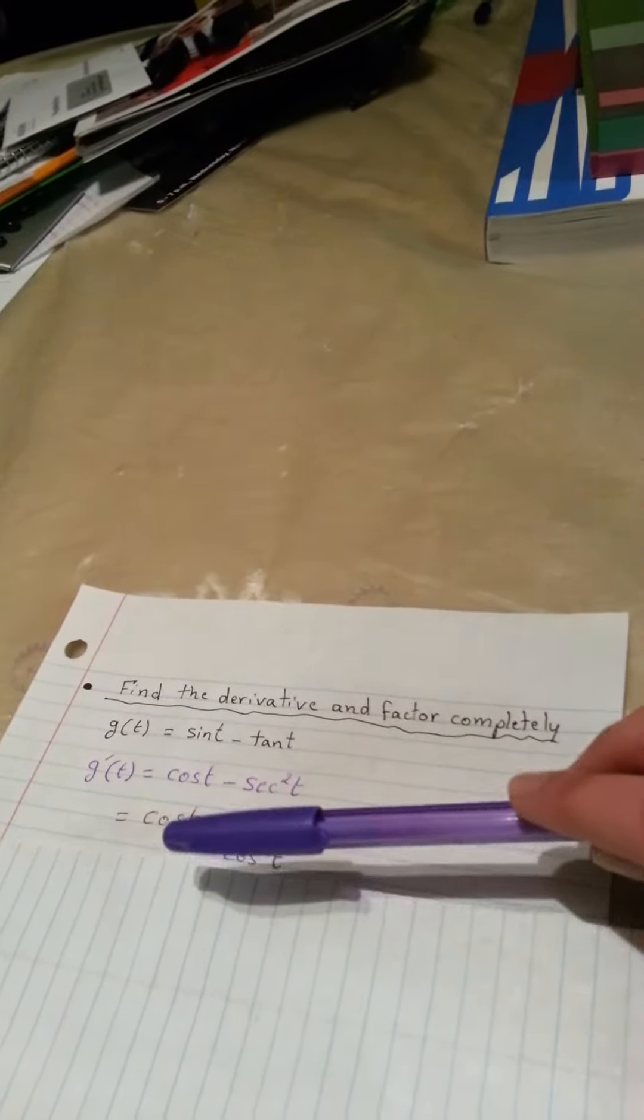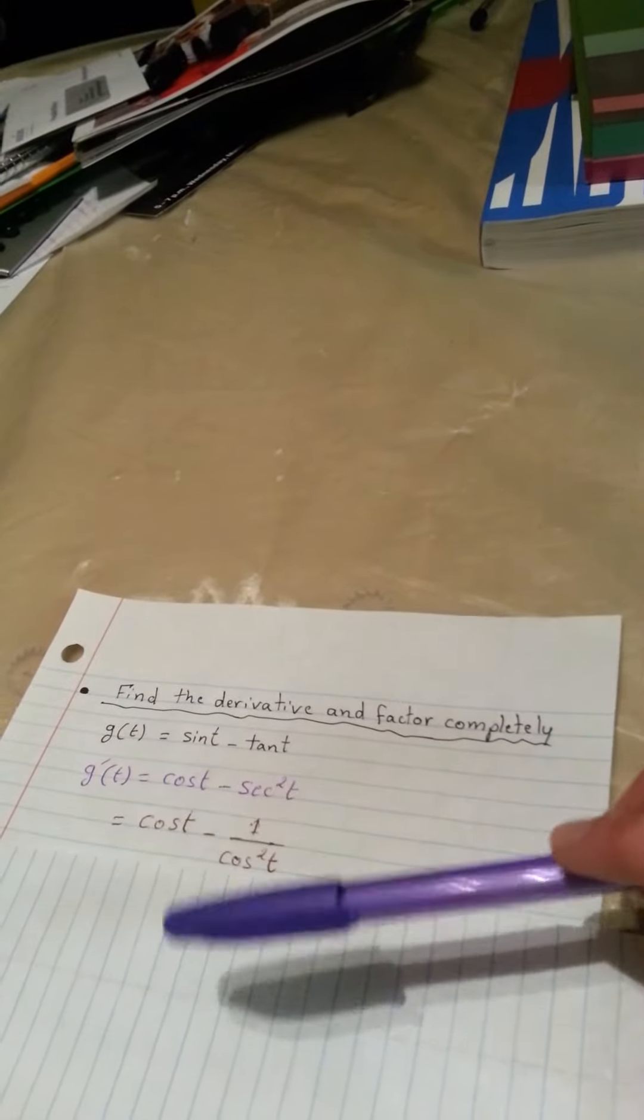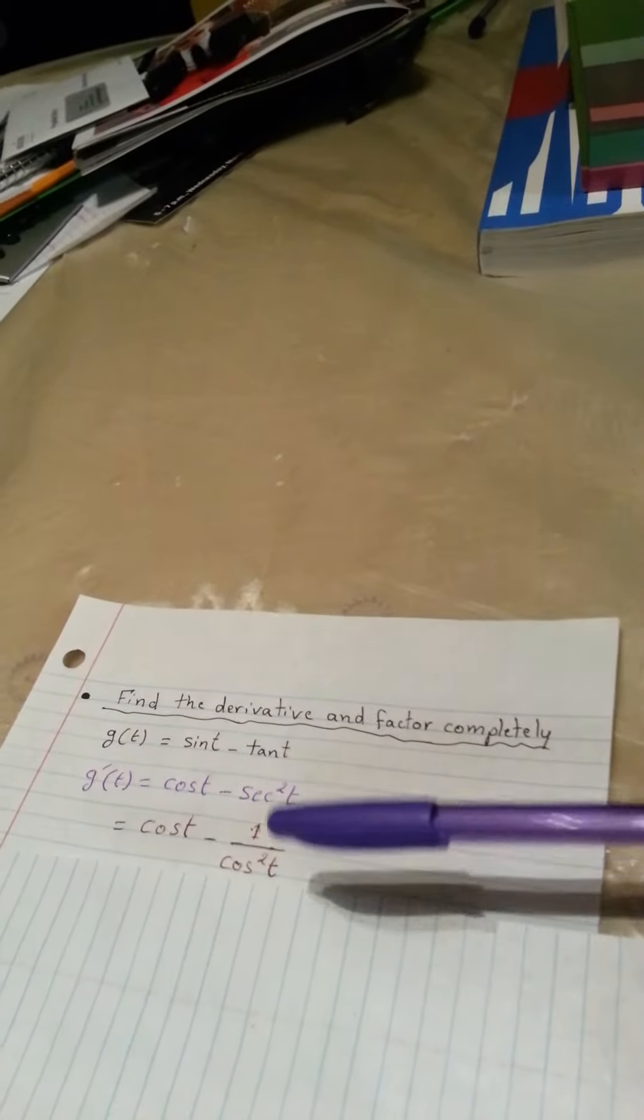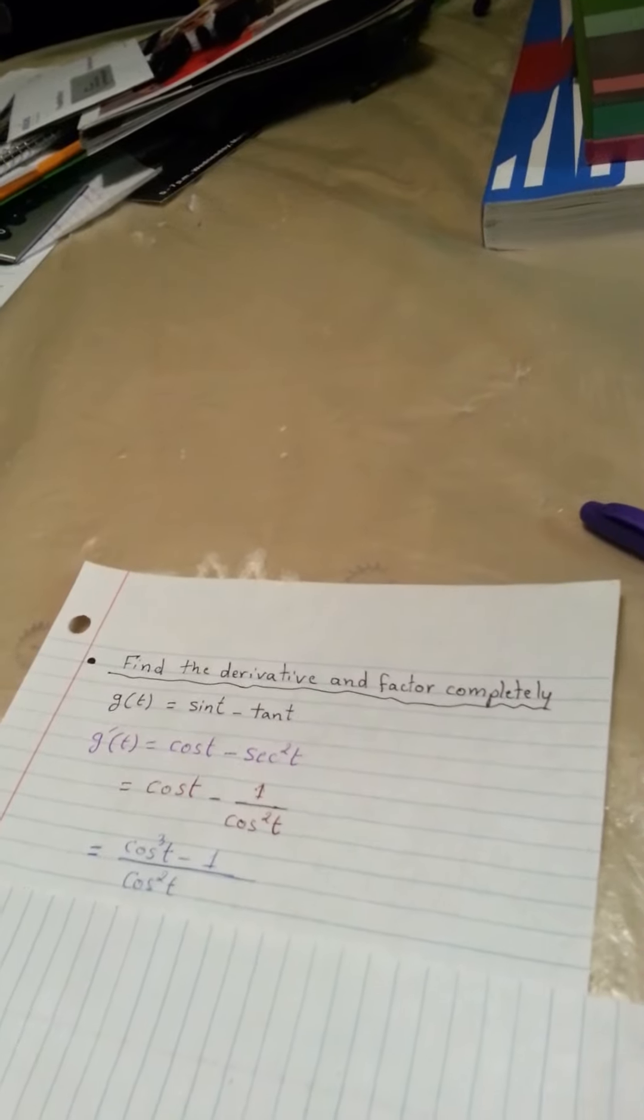We will multiply the denominator and numerator of cosine t by cosine squared t. Come up with this answer.